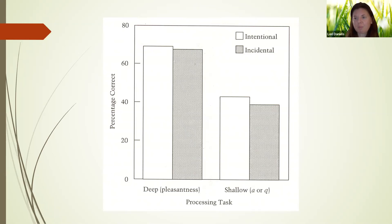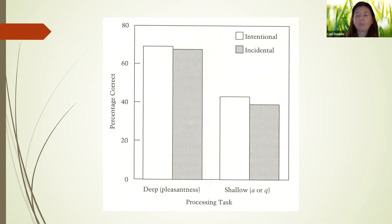We also see that the type of processing — deeper versus shallow — matters a lot. But we were also interested in whether someone's intent, whether they wanted to remember something, mattered. It turns out there's a very small difference between the groups that knew they had to remember later versus those who didn't — and it's not actually statistically significant, meaning there really is no difference. The participants who knew they had to remember later, and therefore had an intent to try, did not do any better than the participants who had no idea it was a memory test. I think this is rather shocking, because we tend to think that wanting to remember something should help.